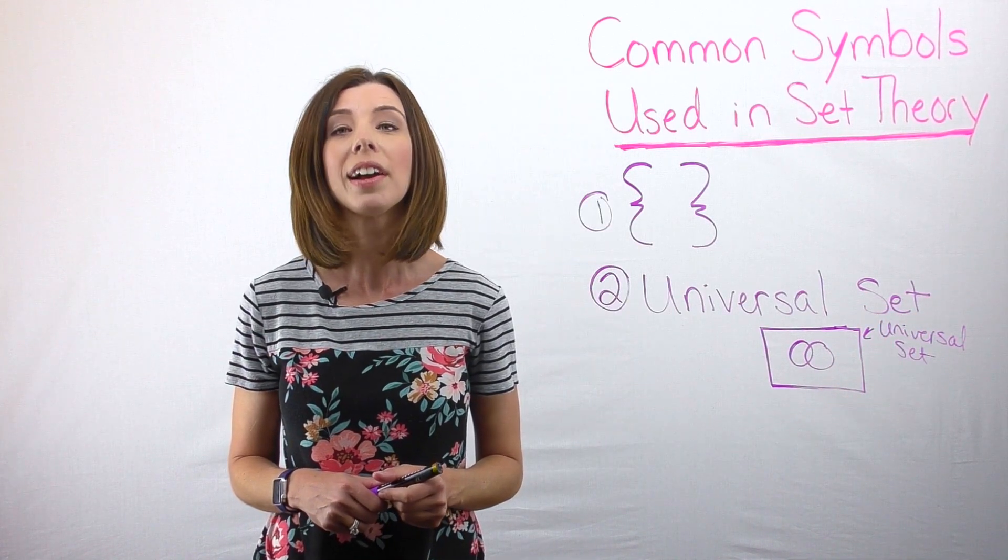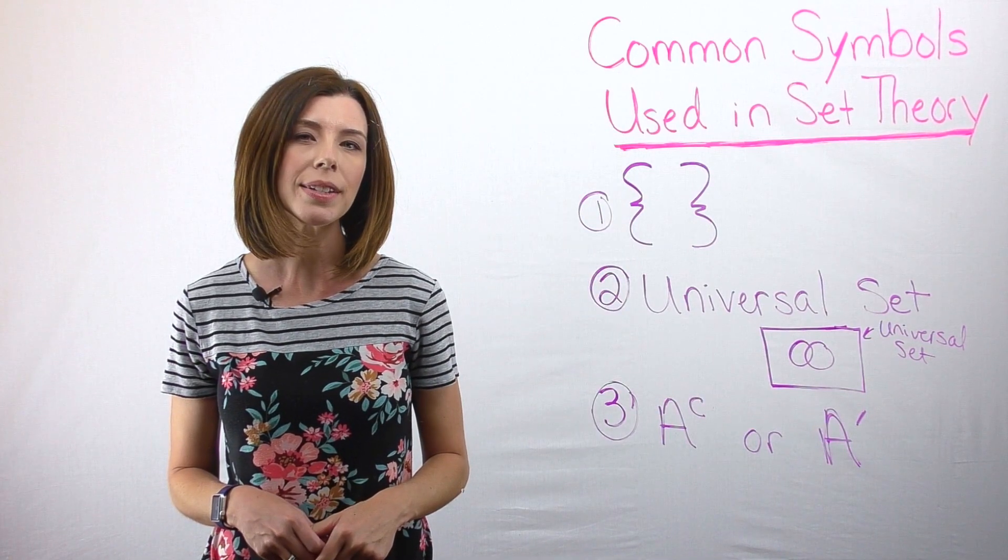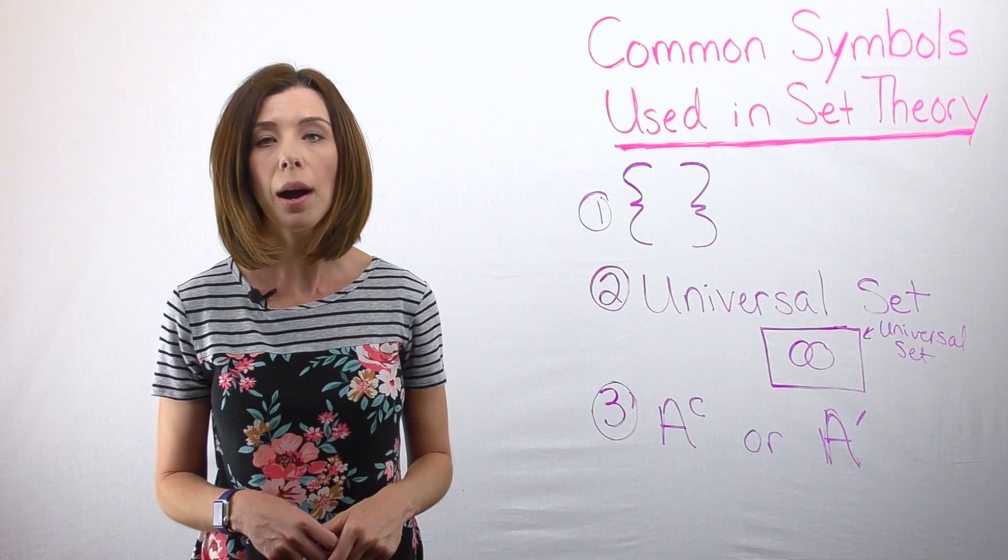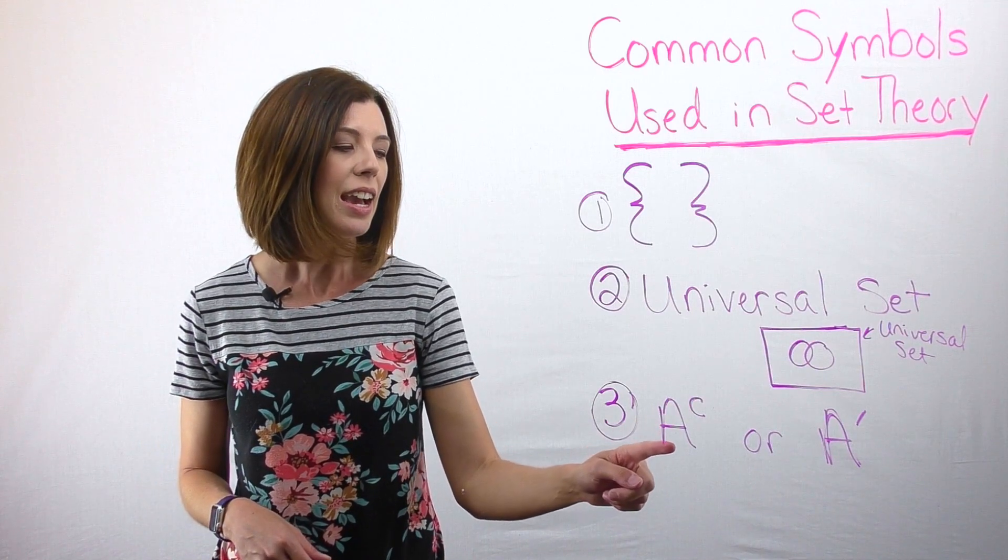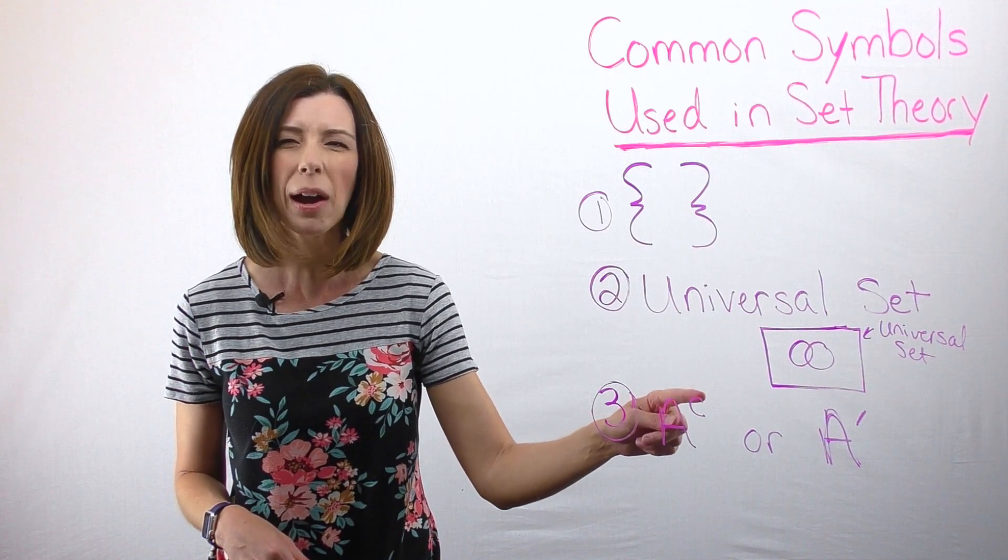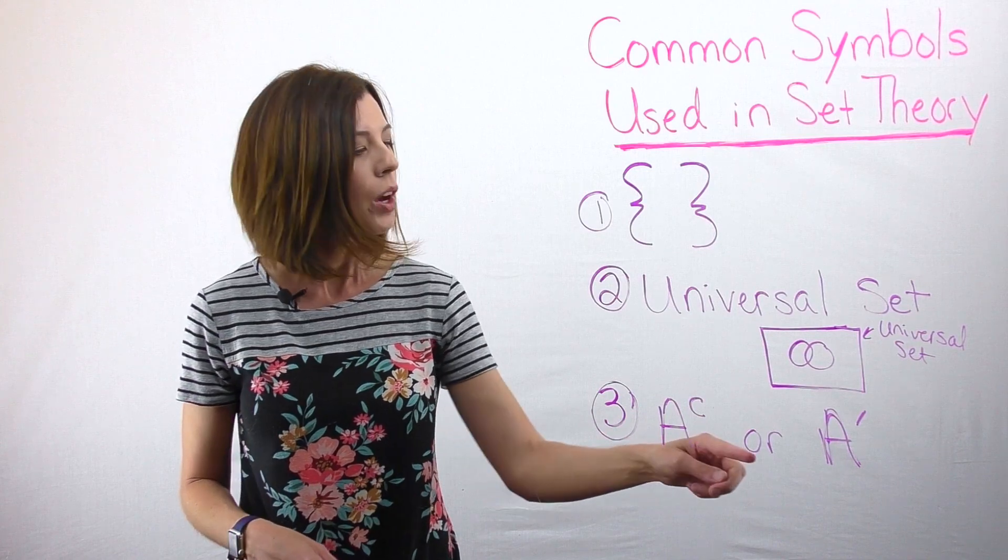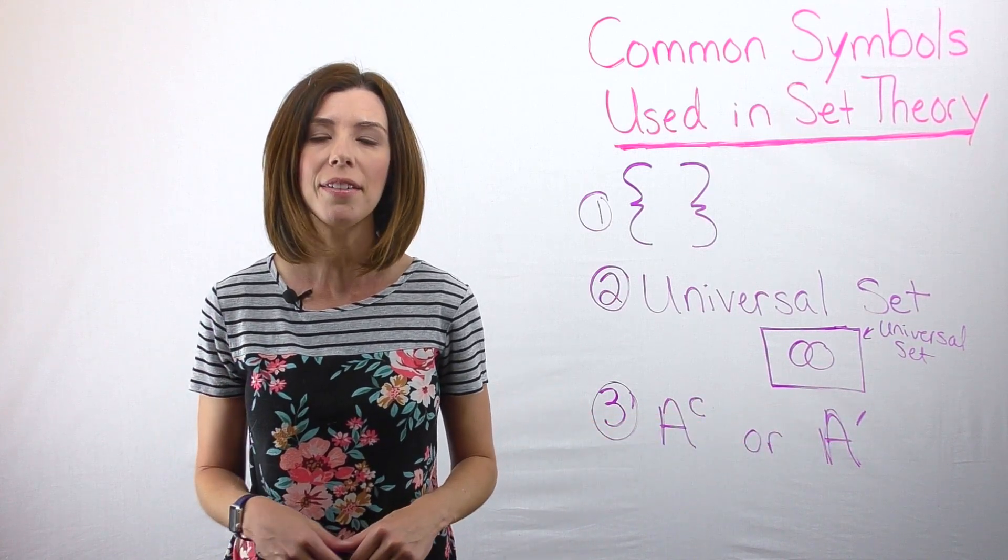Third, let's talk about the complement. You're going to see a couple of different ways that you can do the notation for a complement. For instance, if I was going to say the complement of A, I could write it with a little C raised here, kind of almost to like the power of C. It's not really that, but it looks like that. Or I could put this little dash.